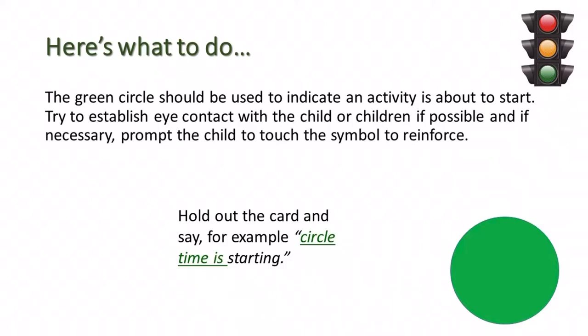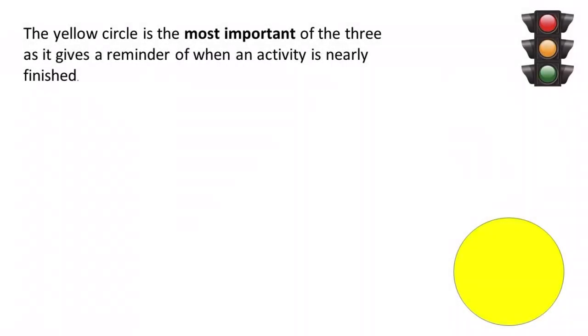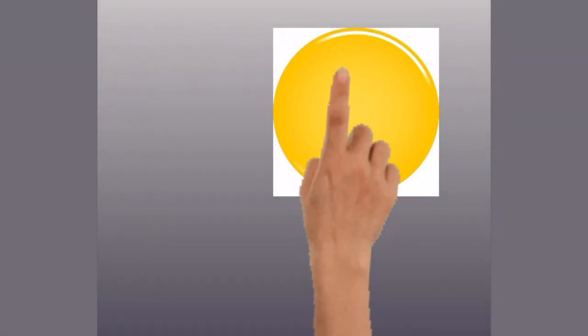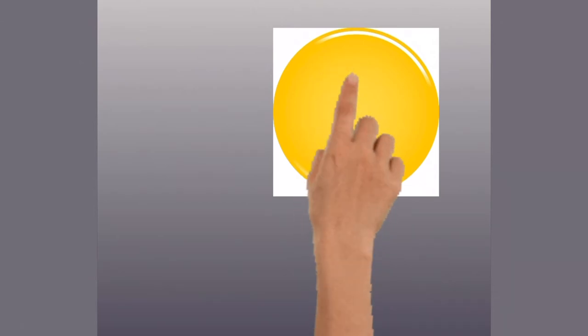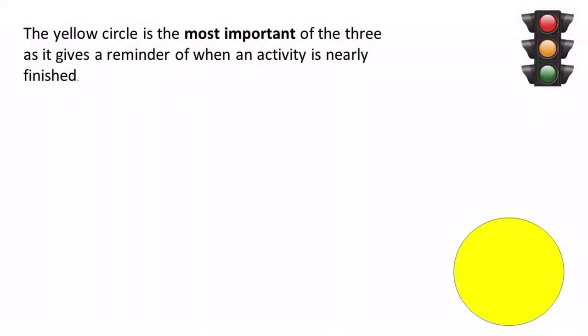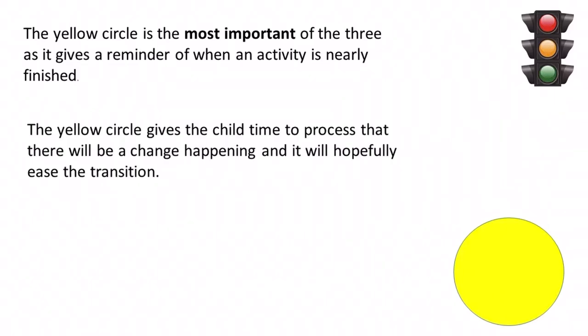Hold out the green traffic light and say, for example, 'Circle time is starting.' The yellow traffic light is the most important of the three, as it gives a reminder of when an activity is nearly finished. Remember to encourage eye contact and, if necessary, gently prompt the child to touch the yellow traffic light to reinforce their understanding. The yellow symbol gives the child time to process that there will be a change happening, and it will hopefully ease the transition.